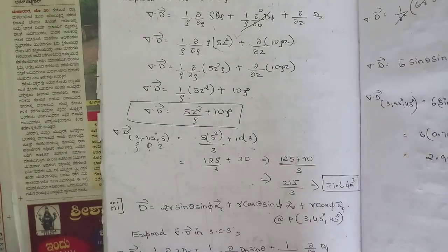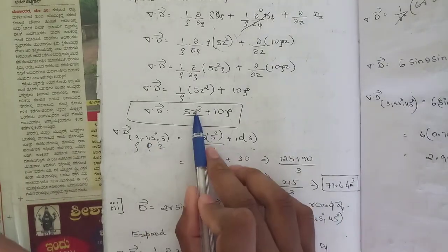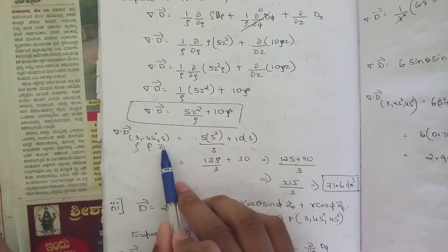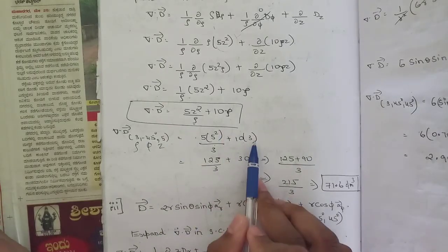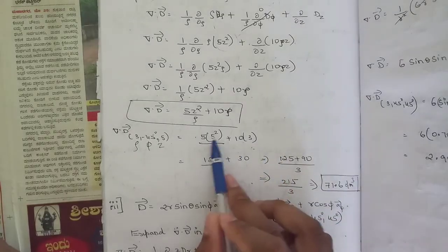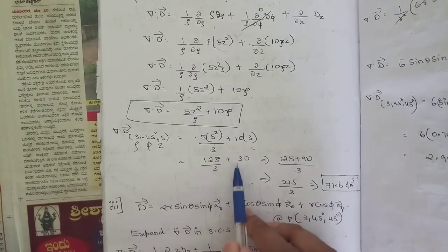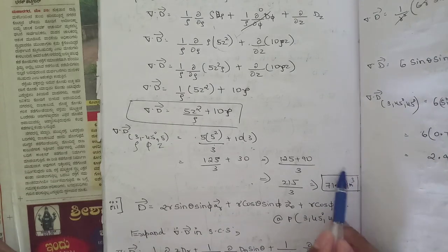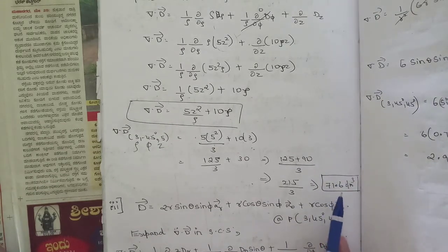Differentiating with respect to ρ gives 1/ρ·φz² and differentiating 10ρz with respect to z gives 10ρ. So del·D = φz²/ρ + 10ρ. Substituting ρ = 3, z = 5: (5·25)/3 + 10·3 = 125/3 + 30 ≈ 71.6 coulombs per meter cube.